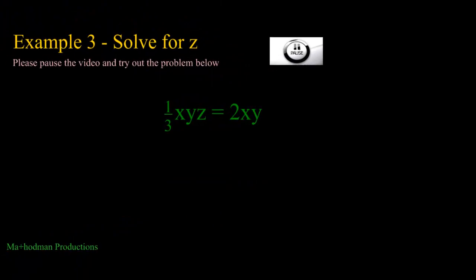This last example, I'm going to have you try it out. You can solve for z, so try to have z all by itself on one side of the equal sign. A little hint before you start the problem on your own. 1/3 xyz, this is all multiplication going on here.